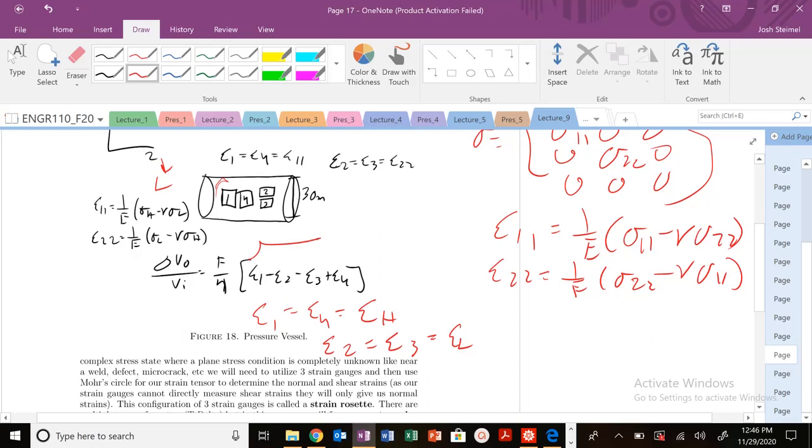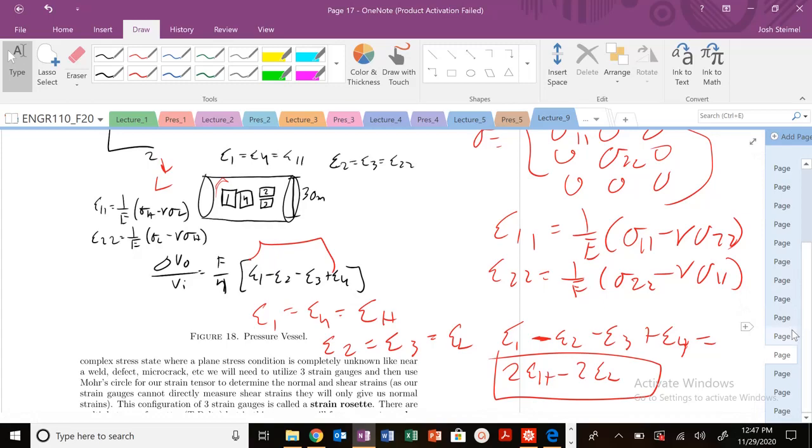And my ε₂ equals ε₃, and that's going to be equal to the longitudinal. Which we're going to call the total strain: ε₁ minus ε₂ minus ε₃ plus ε₄, that is going to equal just 2εH minus 2εL. That's it.